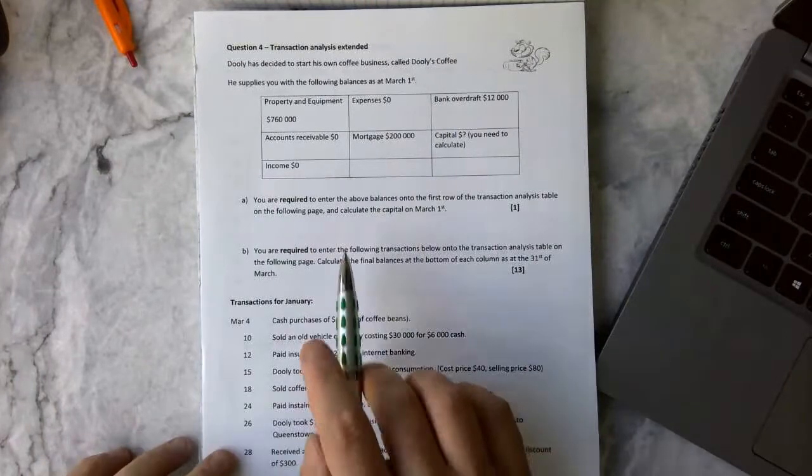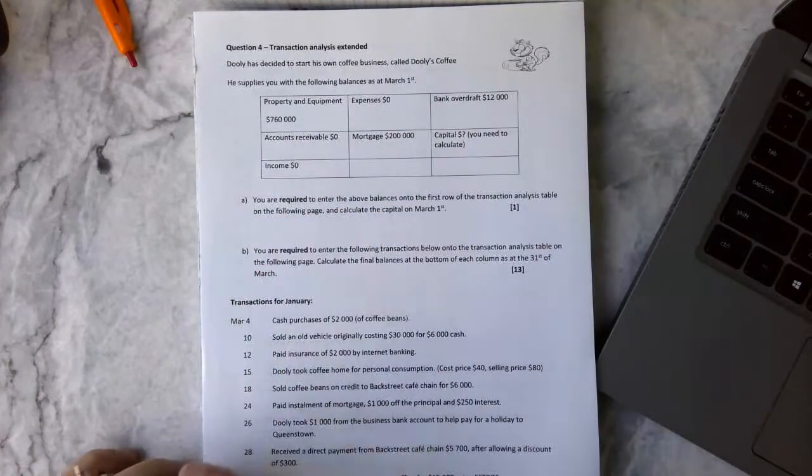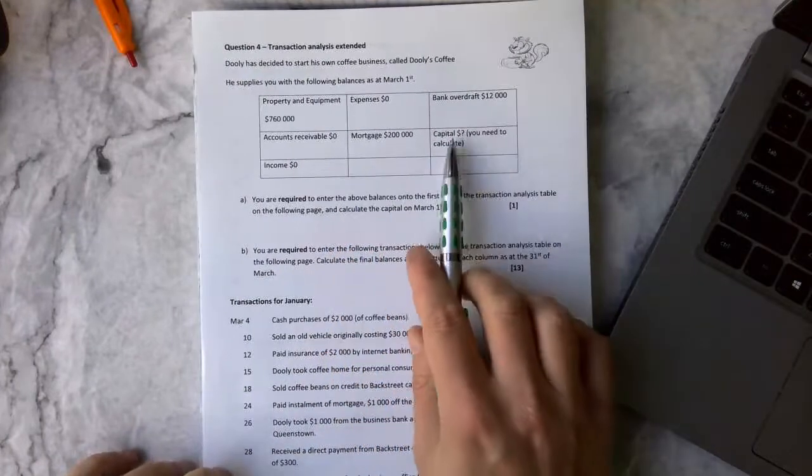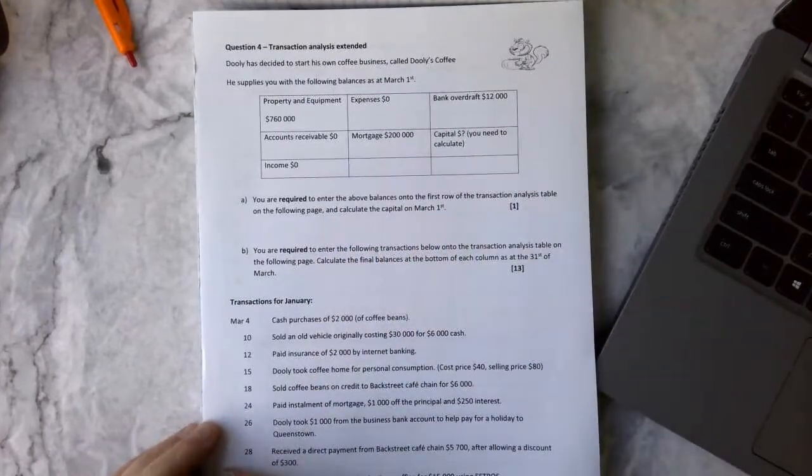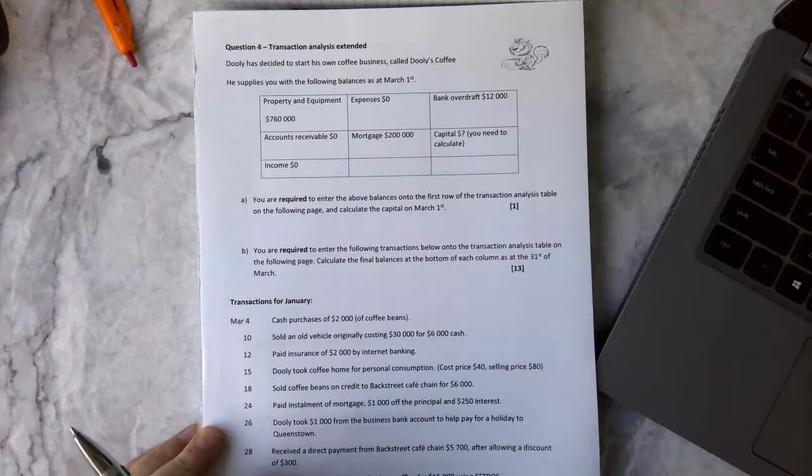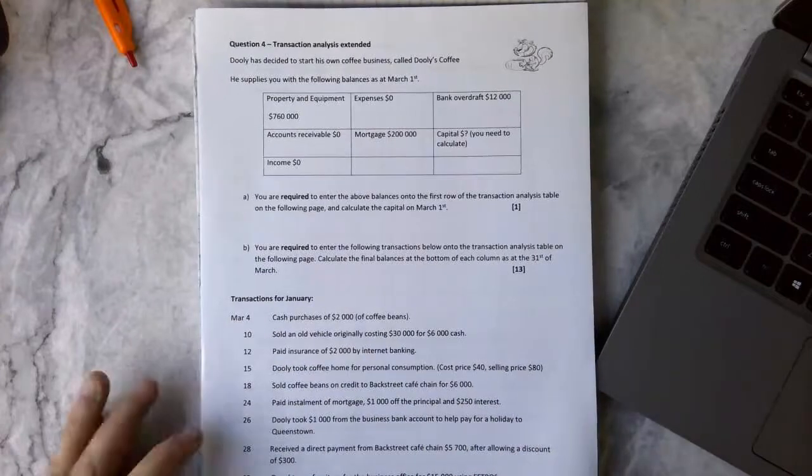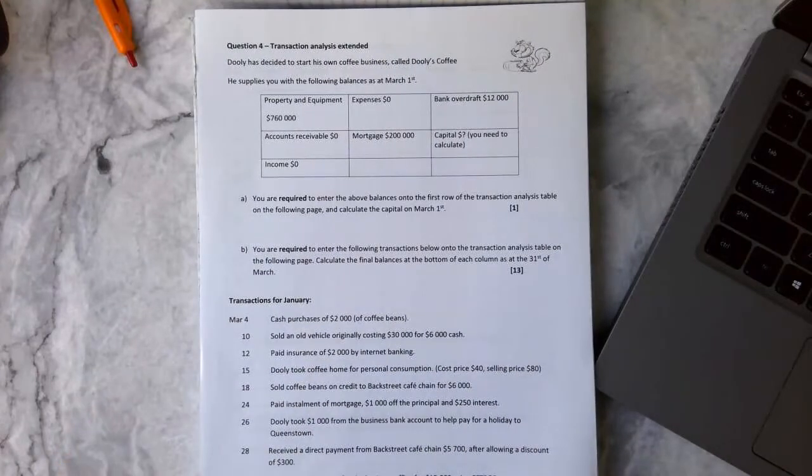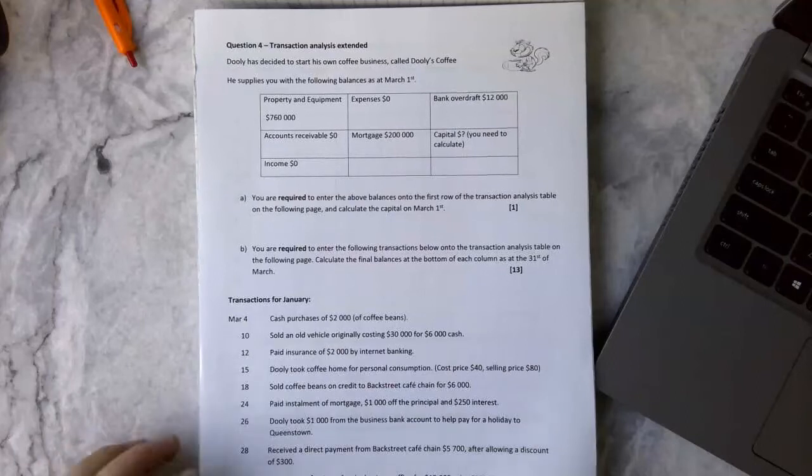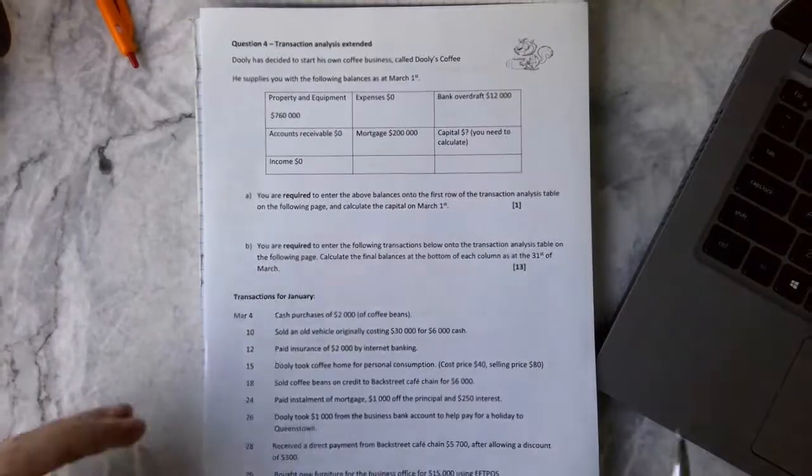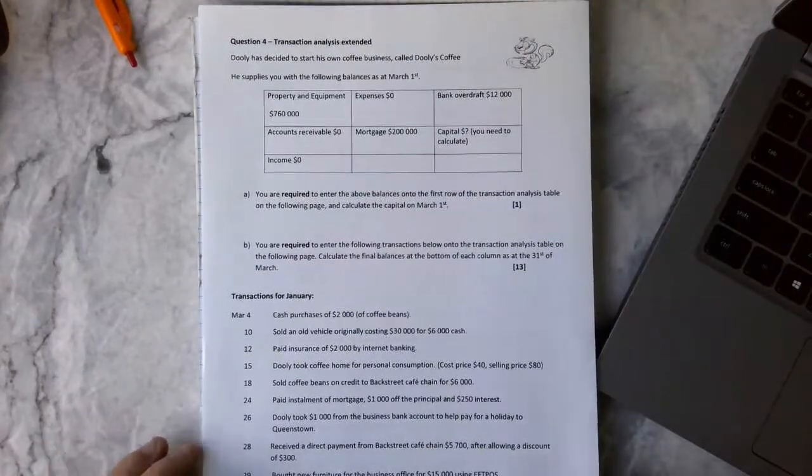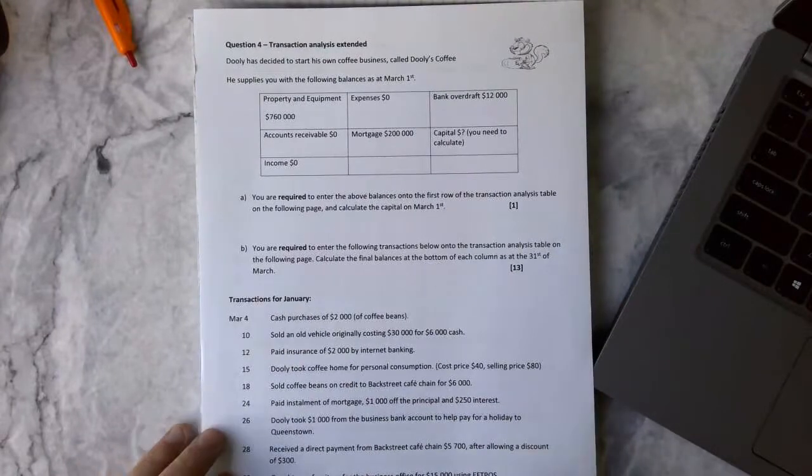So we've got property and equipment up here of $760,000, expenses is zero, bank overdraft is $12,000, accounts receivable zero, mortgage $200,000, capital is question mark and it says you need to calculate this, and income. Part A says you are required to fill in the balances on the transaction table which is on the next page, and you need to calculate capital.